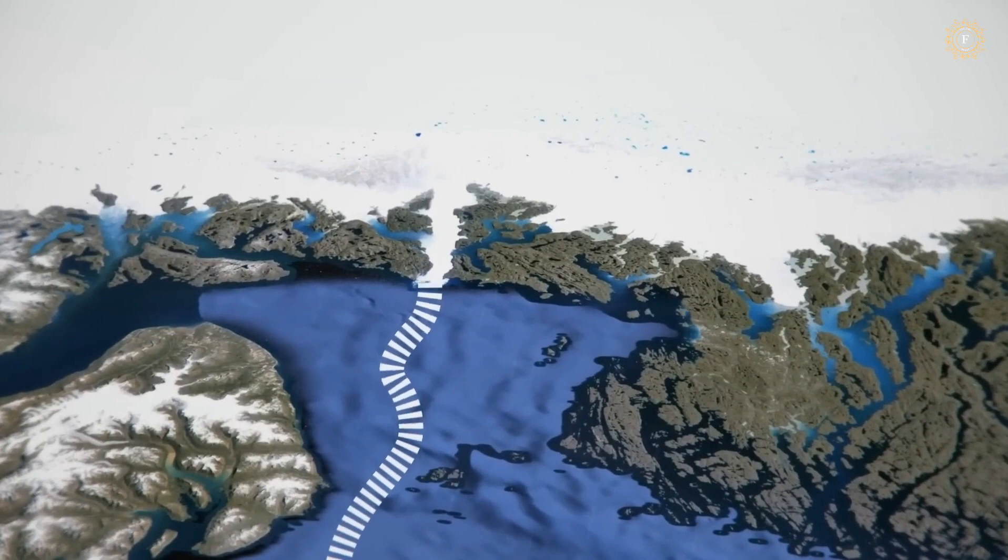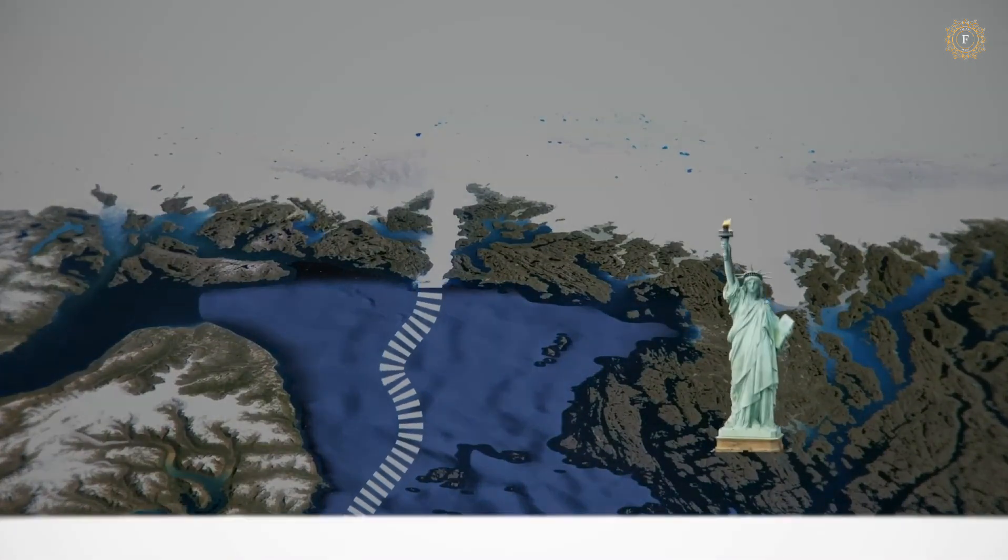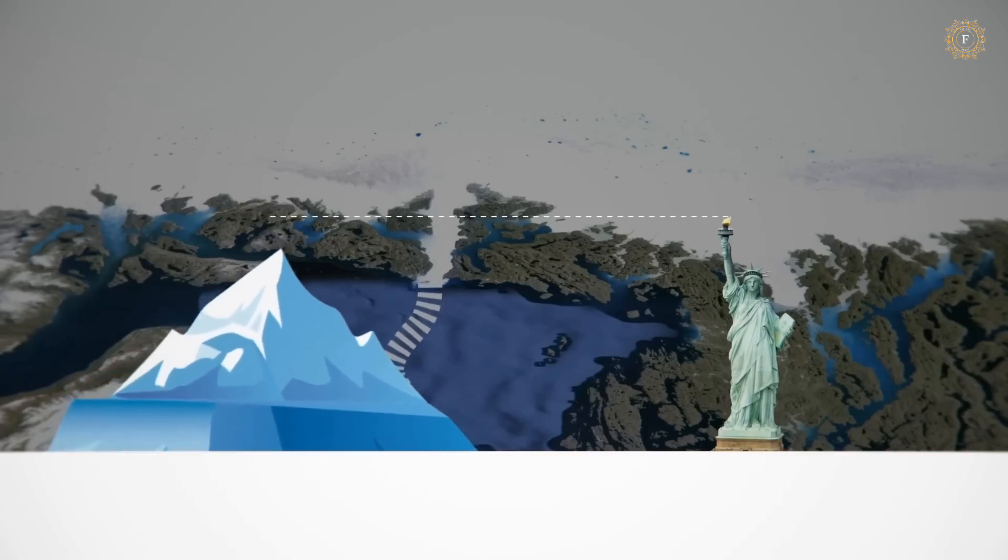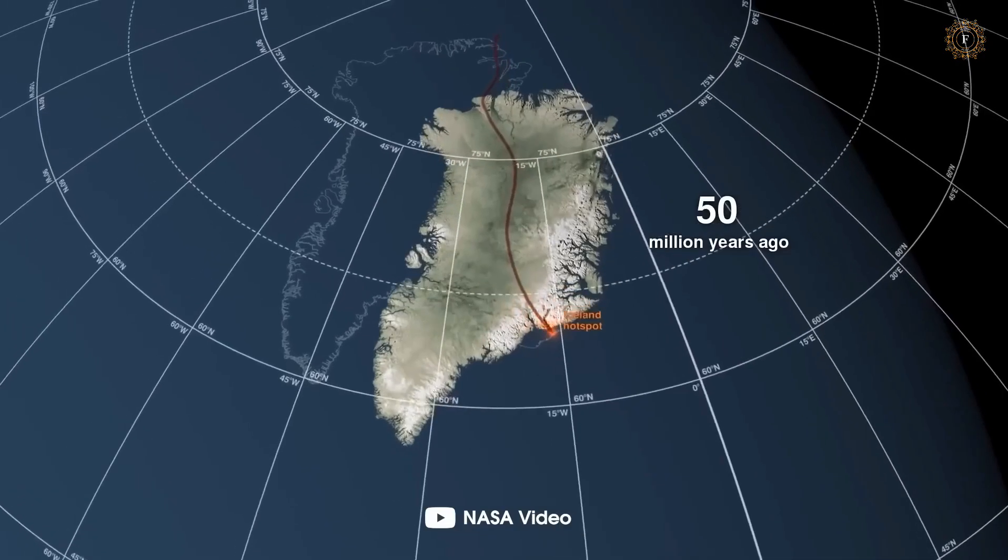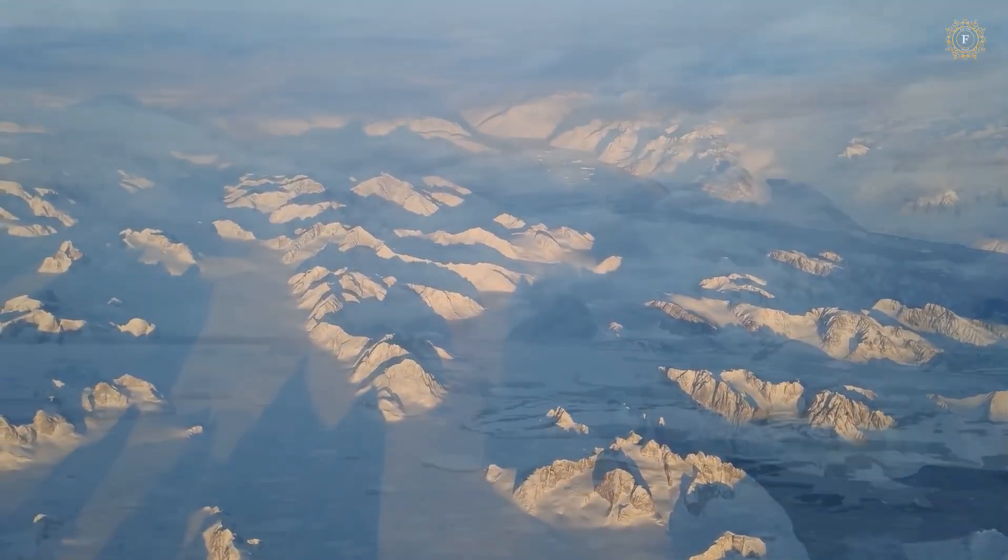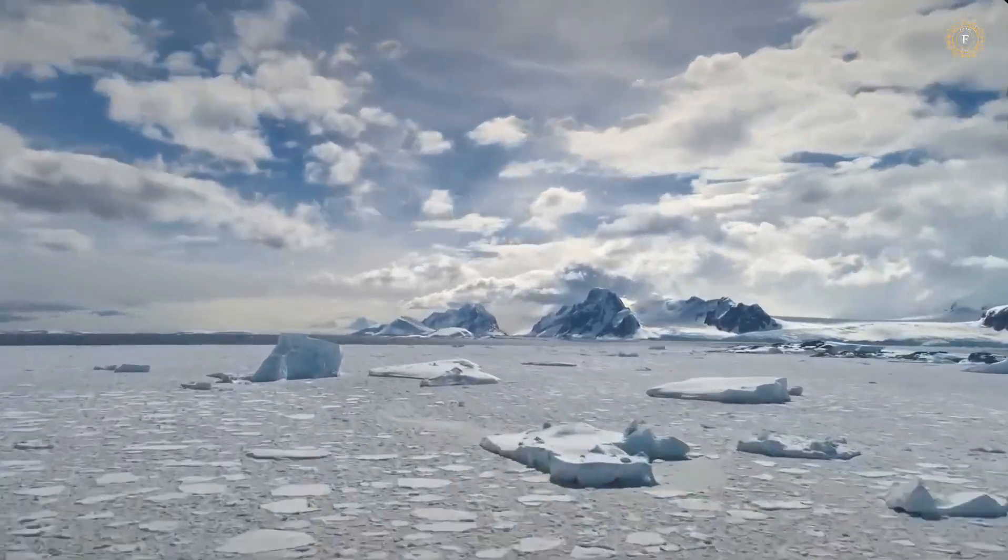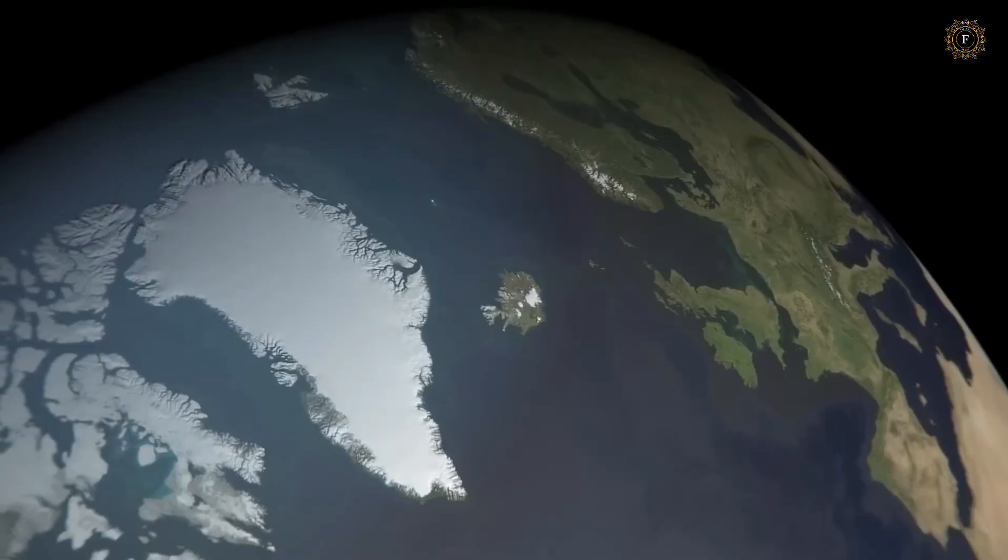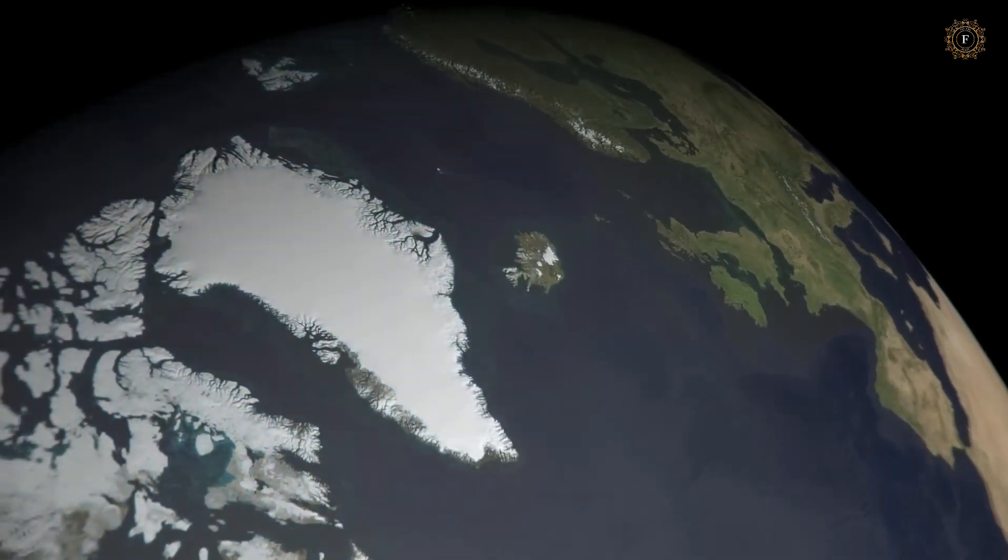The researchers were able to map the canyon's shape and depth with astounding accuracy, revealing a hidden landscape that has been untouched for millennia. This discovery has significant implications for our understanding of the history and formation of Greenland's ice sheet. It suggests that the ice sheet, which is the second largest in the world, has been stable for much longer than previously thought.